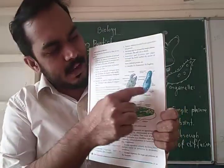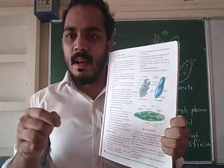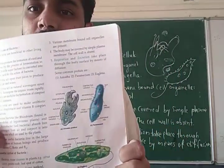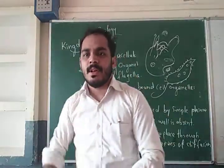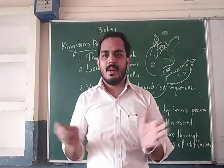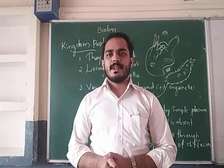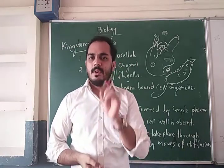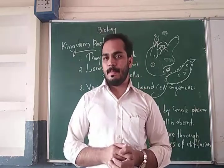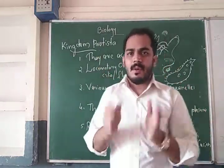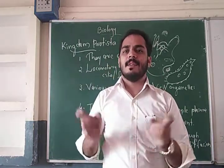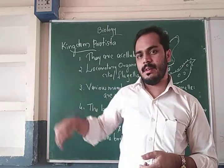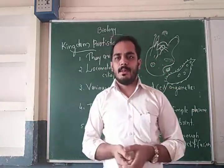In the case of amoeba, this finger-like projection is called pseudopodia. In the case of paramecium, this hair-like structure helps in locomotion. In Kingdom Protista, family members have different organs to help with locomotion. To summarize: Kingdom Protista members are unicellular and eukaryotic. The locomotory organs are pseudopodia in amoeba, cilia in paramecium, and flagella in euglena — flagella meaning a tail-like structure. I hope all of you understood this topic. Thank you.